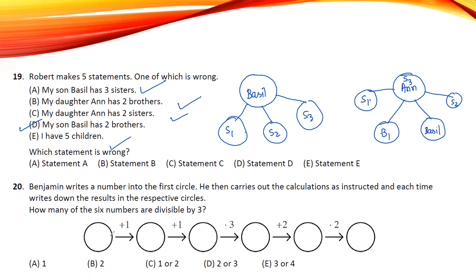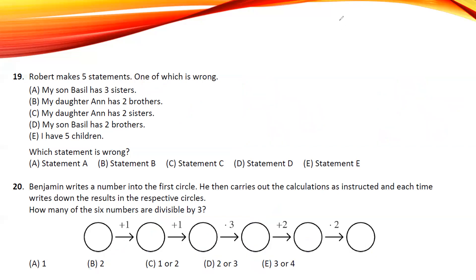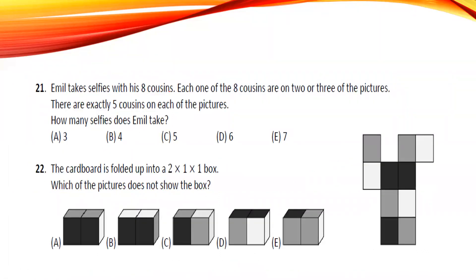Benjamin writes a number into the first circle and carries out calculations. Starting with 2: 2+1=3, 3+1=4, 4×3=12, 12+2=14, 14×2=28. Divisible by three: two numbers. Starting with odd number 1: 1+1=2, 2+1=3, 3×3=9, 9+2=11, 11×2=22. Divisible by three: two numbers. Every starting number gives you two numbers divisible by three.